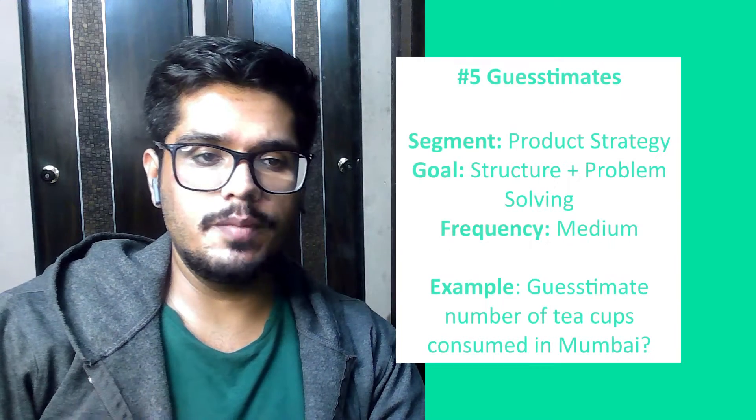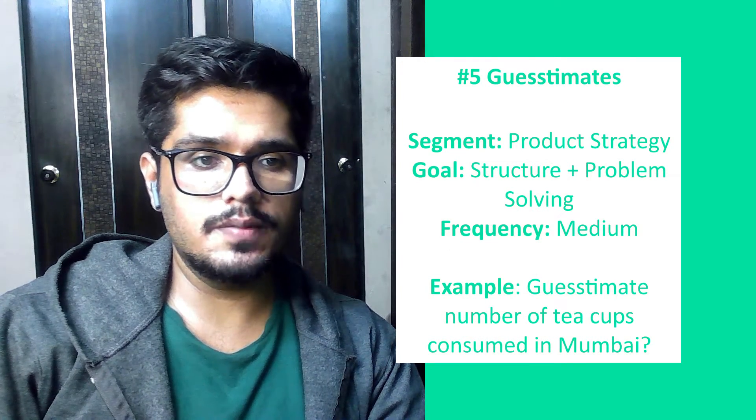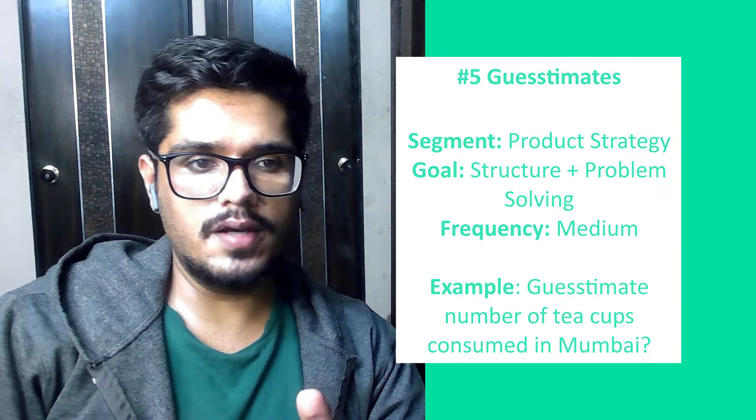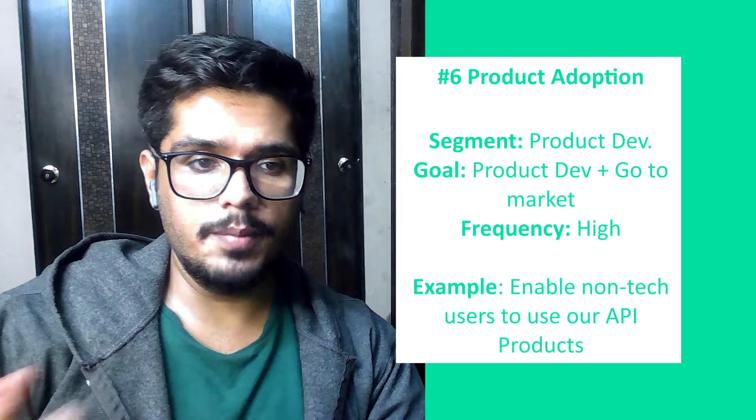If only one customer is facing the issue, there may be an authentication failure, they may have run out of credits, or there may be a development change on their end. The idea is to understand if you know how to isolate and attack outage problems. Question five is estimation or guesstimate questions — for example, estimate the number of teacups consumed in Mumbai. This may not be directly related to APIs, but an API product manager also works with the strategy team to take APIs to market.